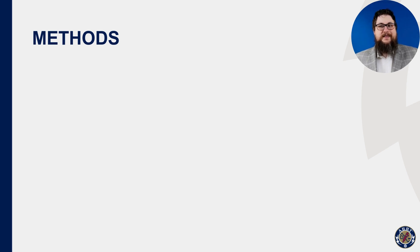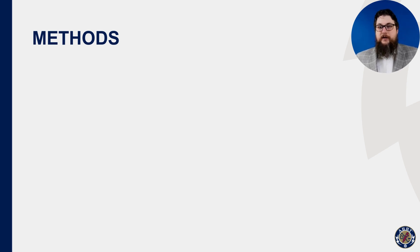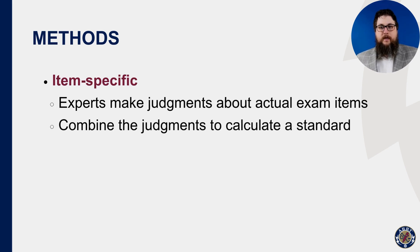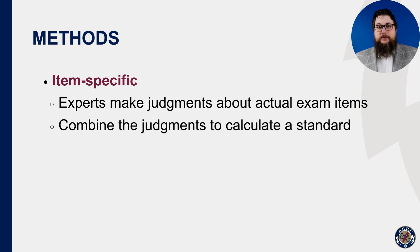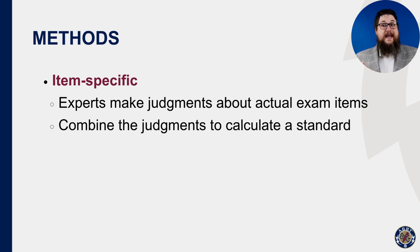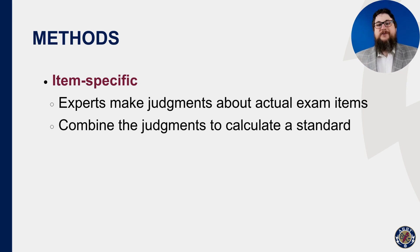Once the committee has defined the minimally qualified candidate, we need to turn that description into something we can use for scoring. There are many methods out there, but we can group them into two broad categories: item-specific and global. Our most common item-specific activity is a simple question for our experts: what percent of minimally qualified candidates will answer this item correctly? When we ask the question enough times — say, the length of an exam — we can calculate a numerical representation of the committee's expectations.